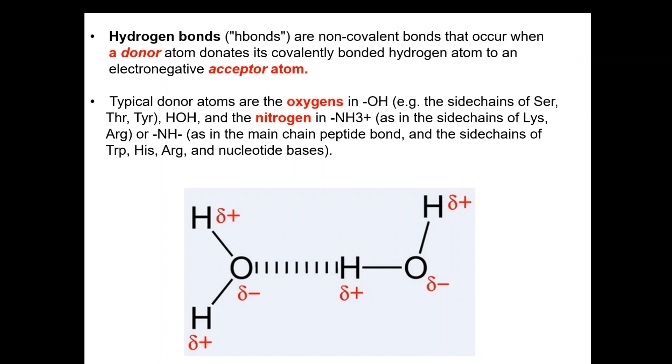The hydrogen bond is not stronger than ionic or covalent bonds, but their strength comes from their number. Many hydrogen bonds can form a strong network that really affects the system.